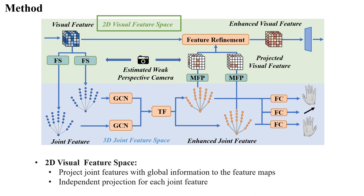To avoid feature confusion caused by projecting joints back to the same pixel location, we independently project each joint into a visual feature map. We utilize a convolutional module to fuse the projected visual feature maps and original visual feature maps. Joint features with global information can provide strong disambiguation cues for visual features while filling in the lack of image information caused by mutual occlusion.